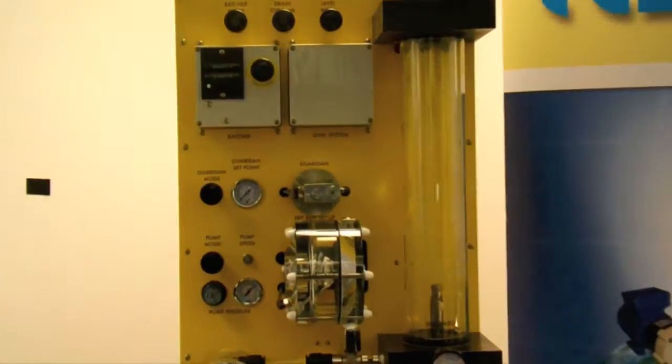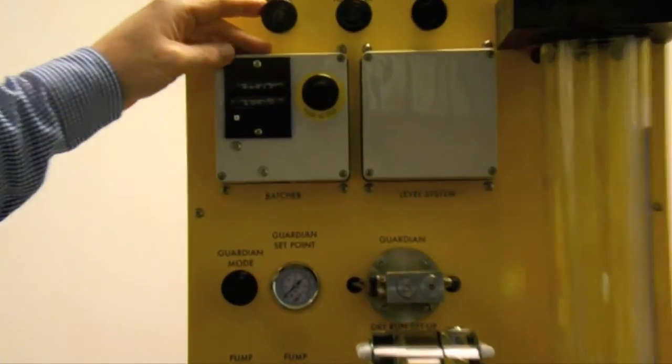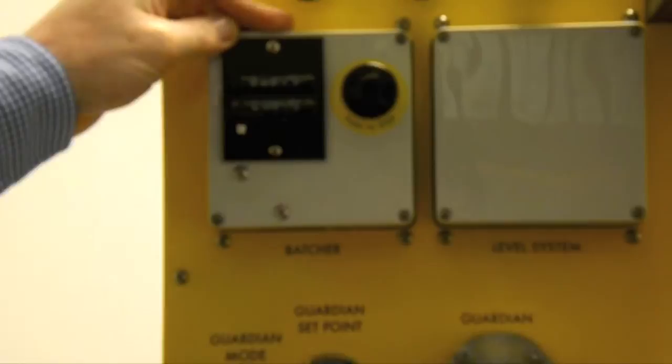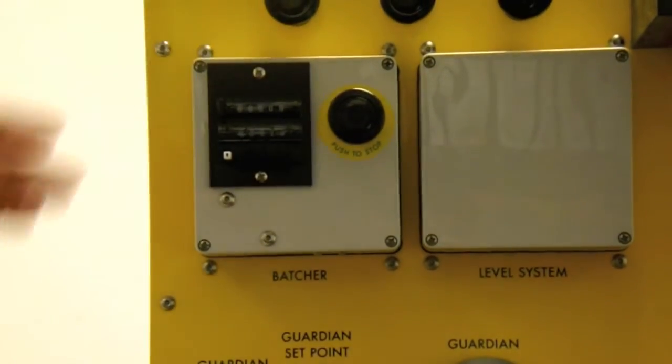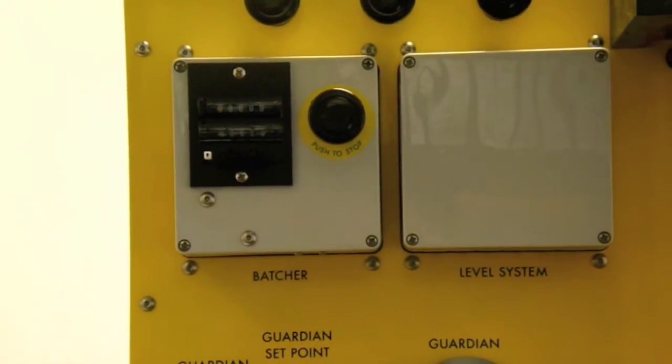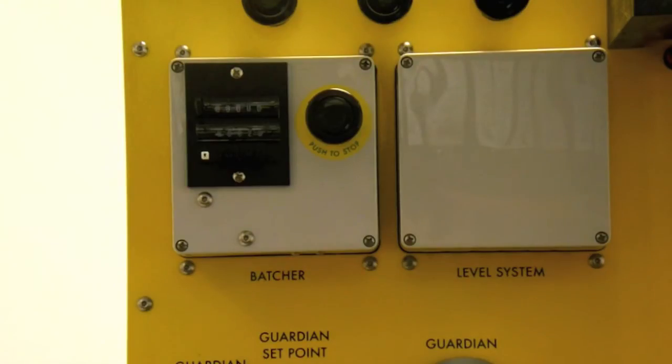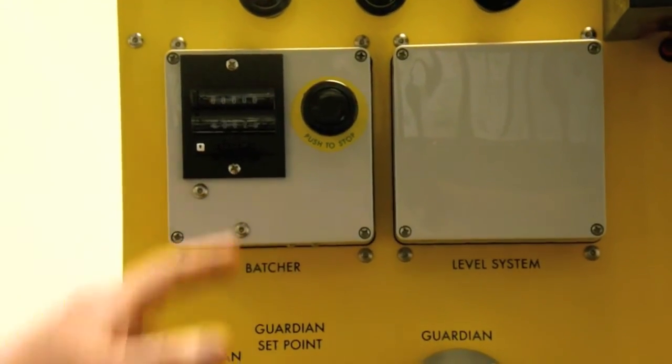The next system I am going to show you is our batcher. The batcher is very useful if you have to pump predetermined volumes. So let's say you needed to fill 10 containers with 10 litres in each one. What we do is because we know the pump volume per stroke we just simply work out the number of strokes that we need to do. So let's say this pump does half a litre. We want 10 litres so we put in 20 strokes on our bottom counter here.